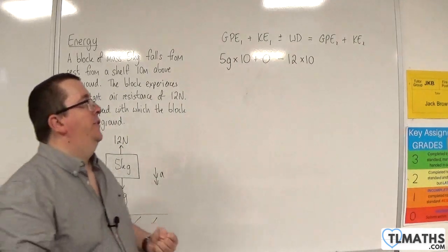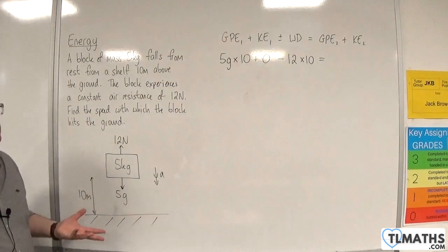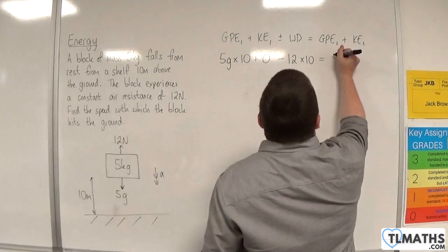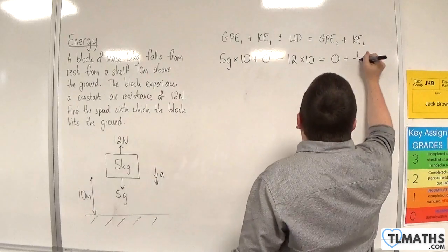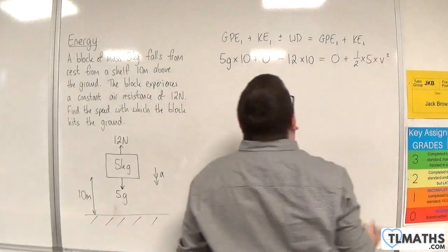Then you've got the final gravitational potential energy. When it hits the ground, that will be zero. Plus the final kinetic energy, which will be 1 half times 5 times V squared.